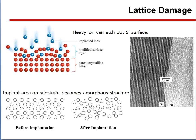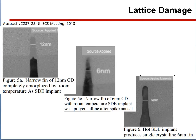The implant area on the substrate becomes an amorphous structure. Figure 5a shows a narrow thin film of 12 nm completely amorphous. Figure 6 nm with room temperature SDE implant was polycrystalline after spike anneal. Figure 6a shows that hot SDE implant produces single crystalline 6 nm.